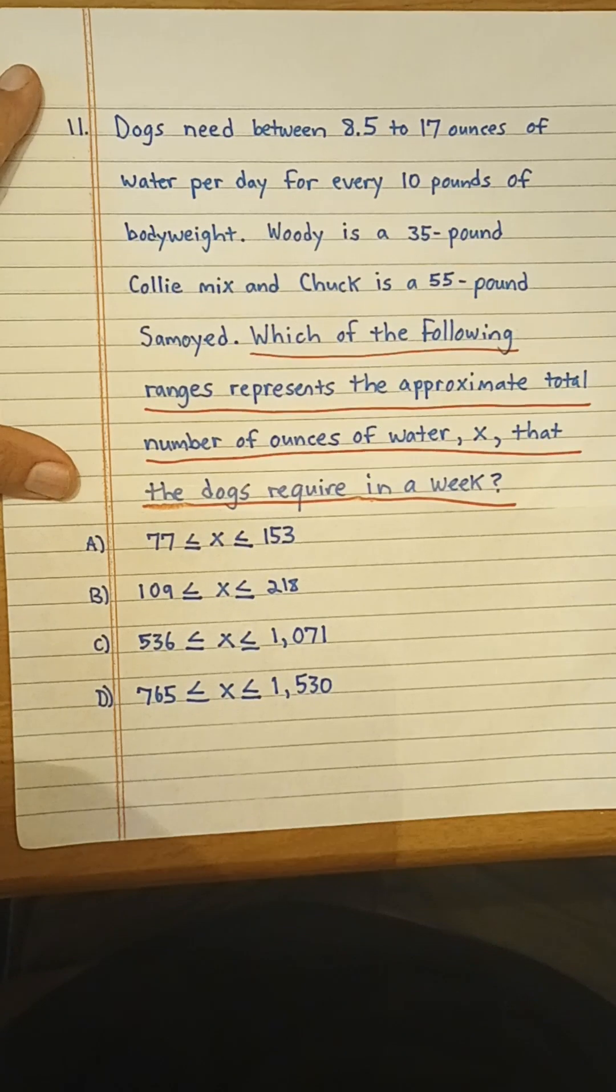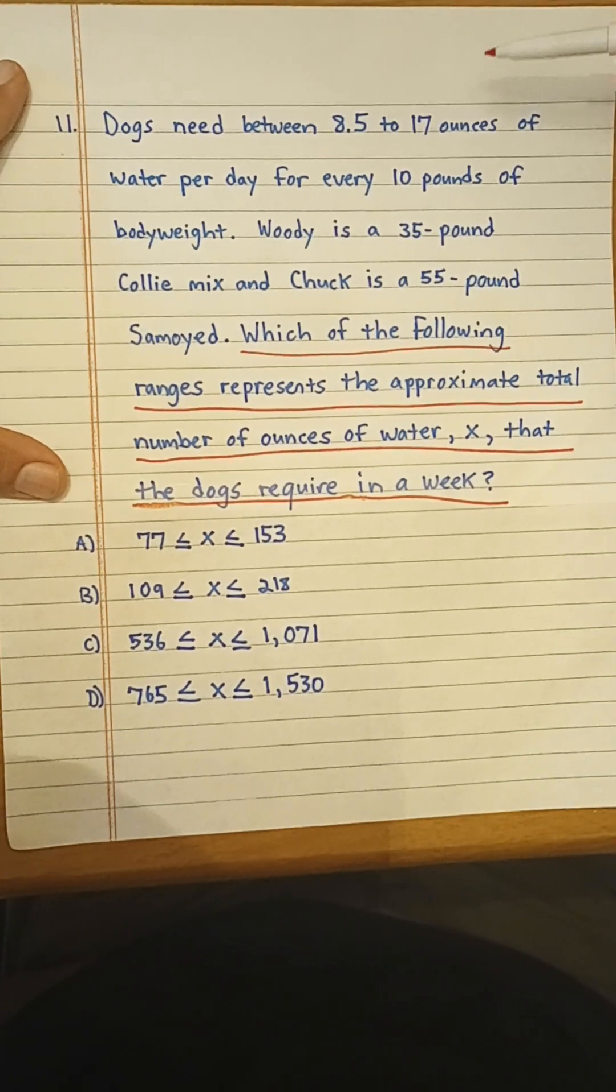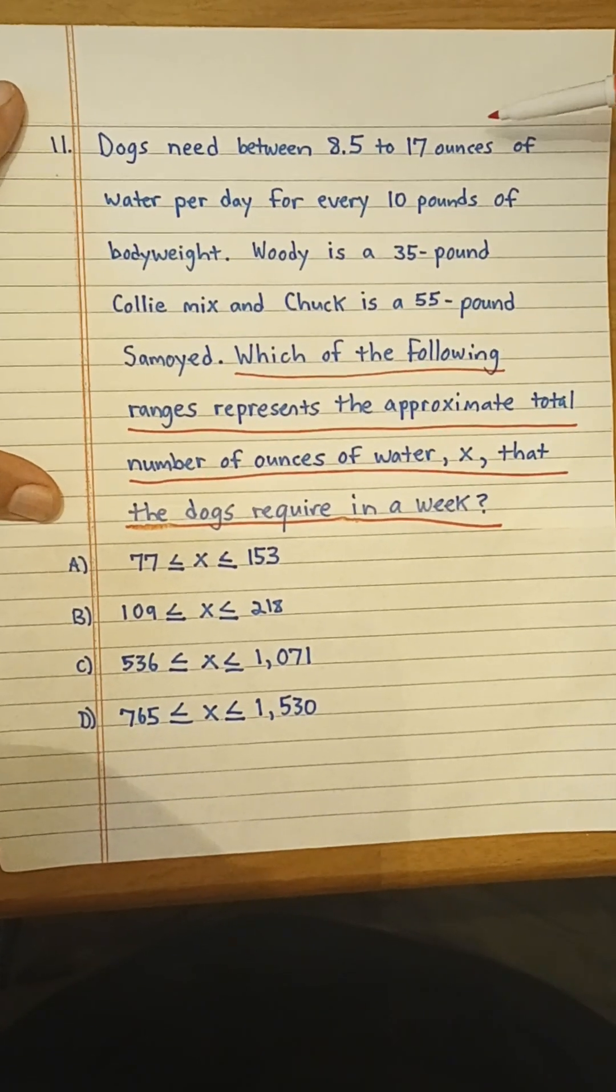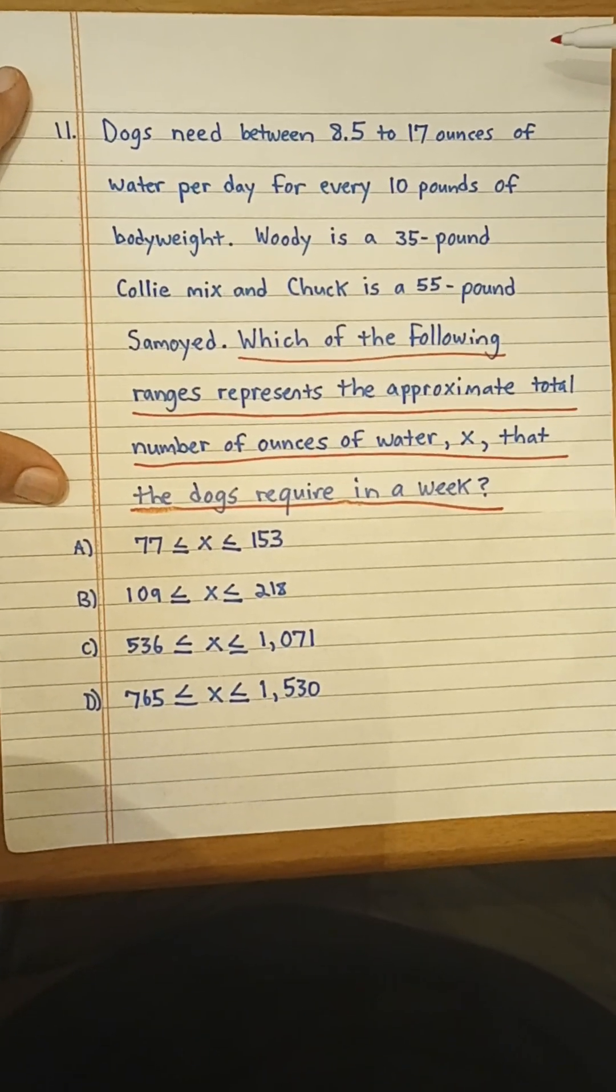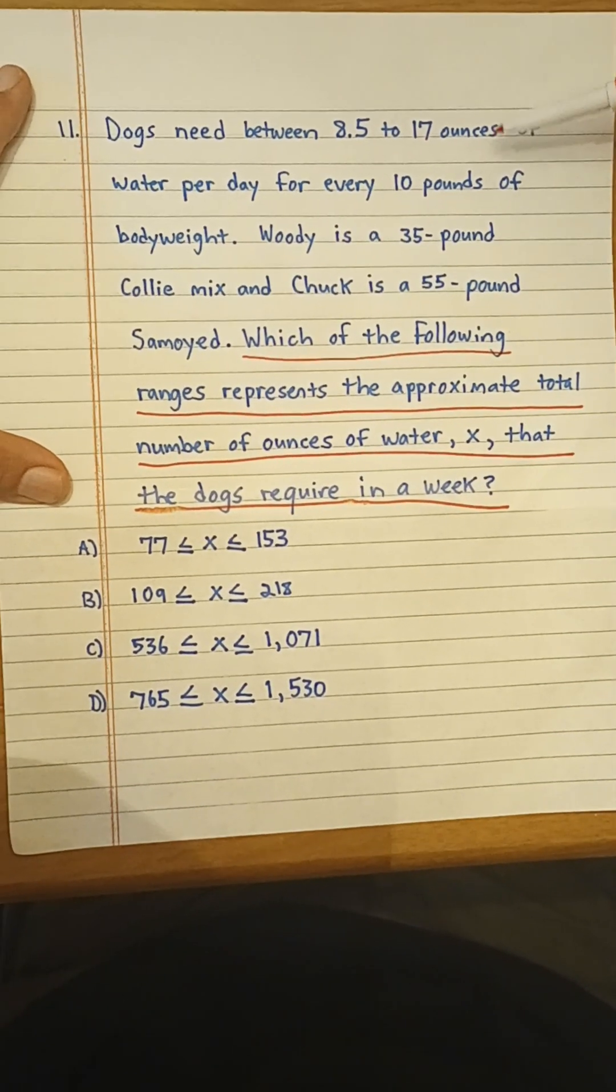Okay, so let's take a look at what we have here. It says, dogs need between 8.5 to 17 ounces of water per day for every 10 pounds of body weight.